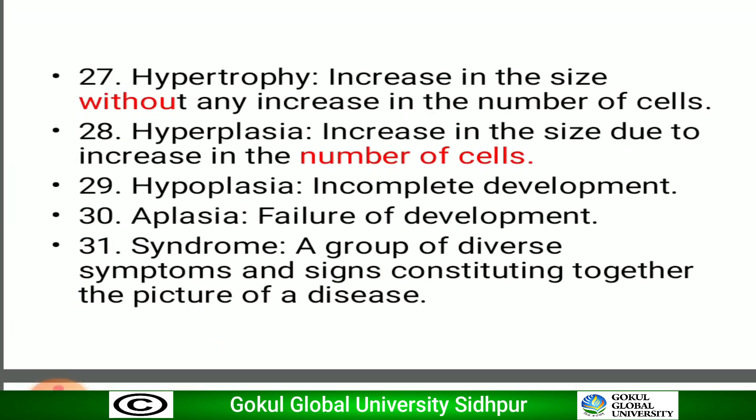Hypertrophy is an increase in size without any increase in the number of cells. Hyperplasia is an increase in size due to an increase in the number of cells. Hypoplasia means incomplete development. Aplasia means failure of development.